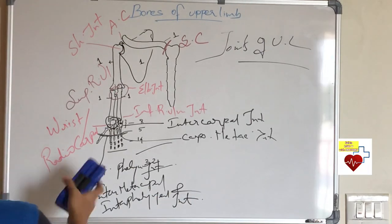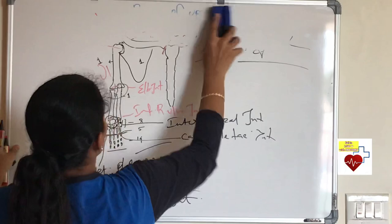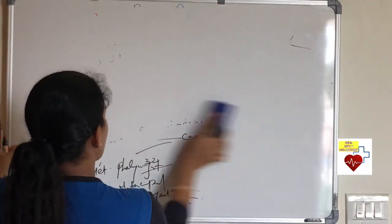You should also know the type and variety of all the joints. We can see in detail in further videos. In this video of all the bones of upper limb, I haven't discussed anything in detail. If you want any specific topic to be discussed in detail please leave it in the comment. We can see the muscles of upper limb in the next video.